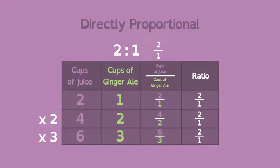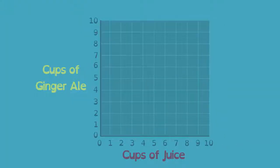Another way to see proportions is with a graph. We can plot two cups of juice and one cup of ginger ale like this. We can show how Carl doubles and triples the original recipe like this.